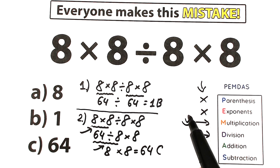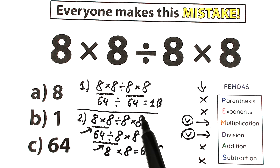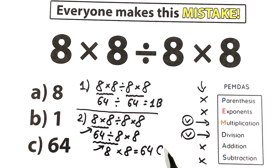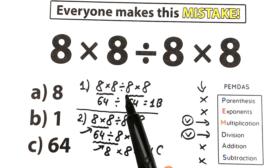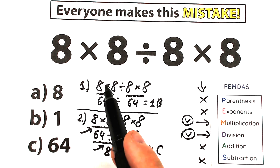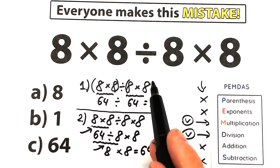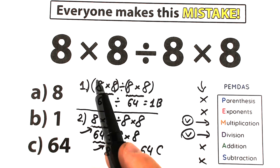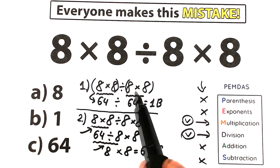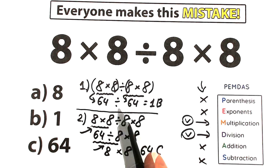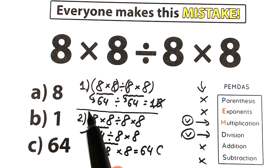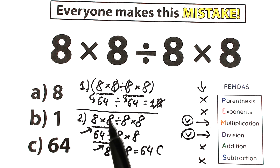A lot of students are confused and arguing about how both solutions can look correct. But here's the explanation: the first interpretation is a very bad solution because we don't have parentheses — you can't just jump from left to right randomly. That approach works only if the challenge is written with parentheses, like (8×8)÷(8×8). With parentheses, the correct answer is 1. Without parentheses, solving randomly is a very bad approach in terms of math.